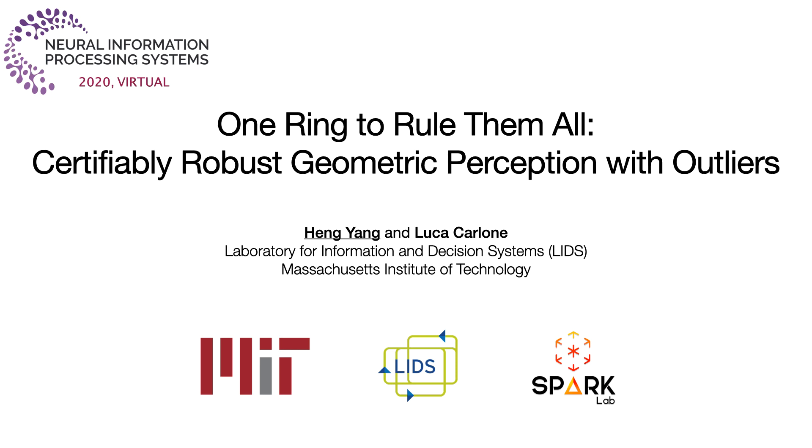My name is Han Yan. I'm glad to present our newest paper, One Ring to Rule Them All: Certifiably Robust Geometric Perception with Outliers. This is joint work with Luca Carlone at MIT.